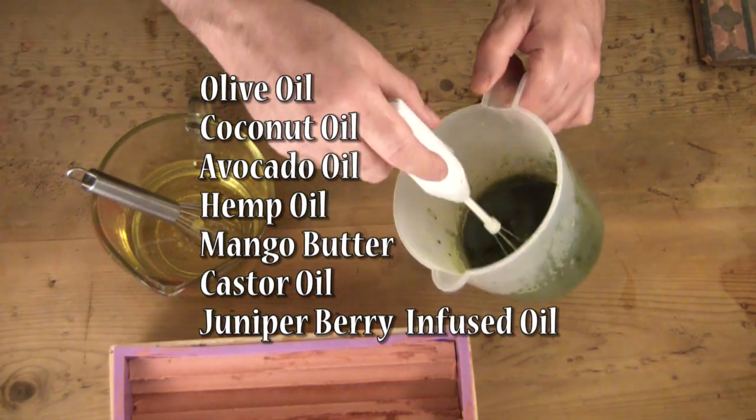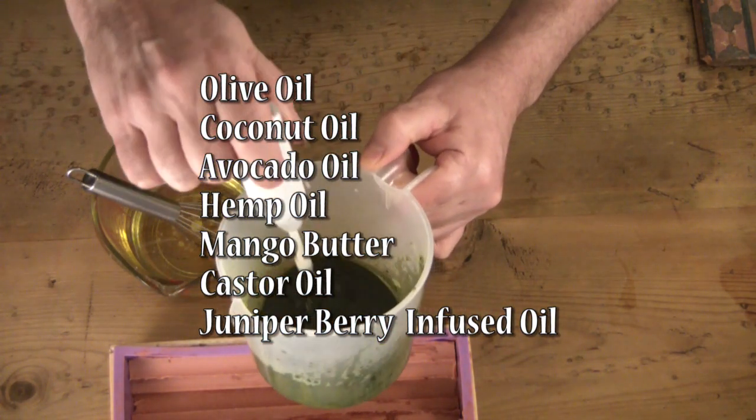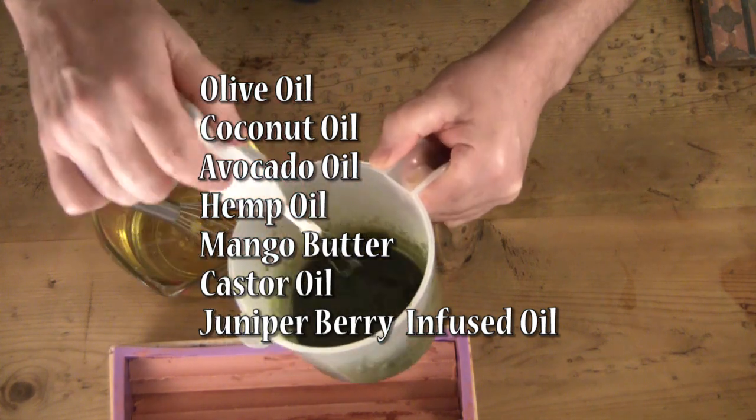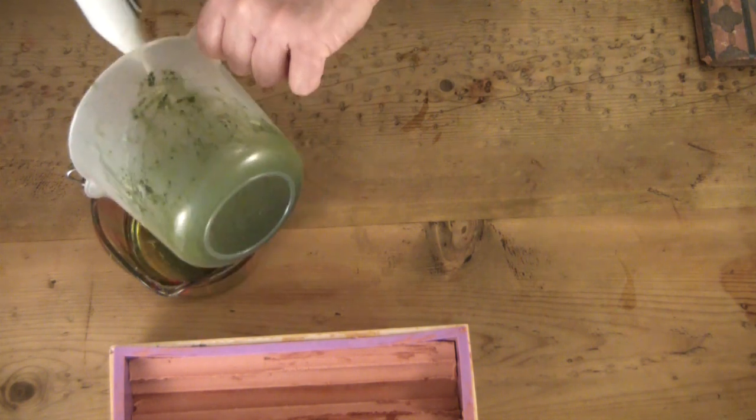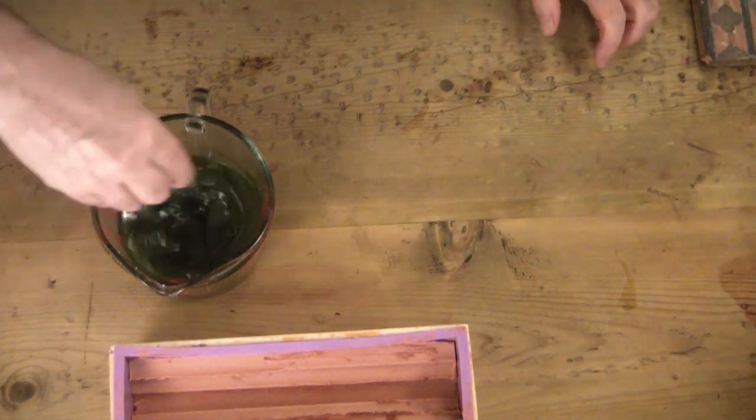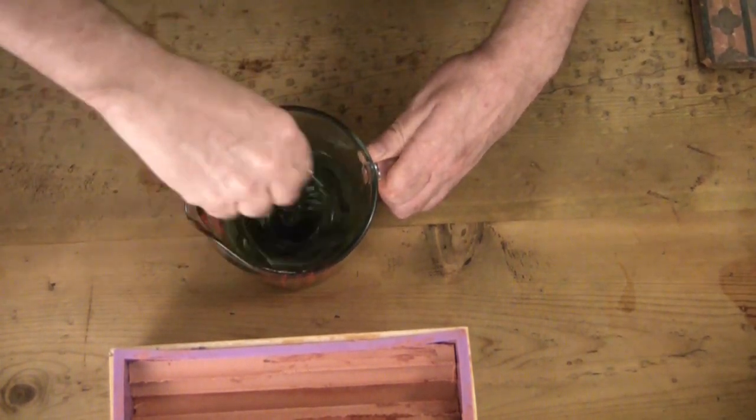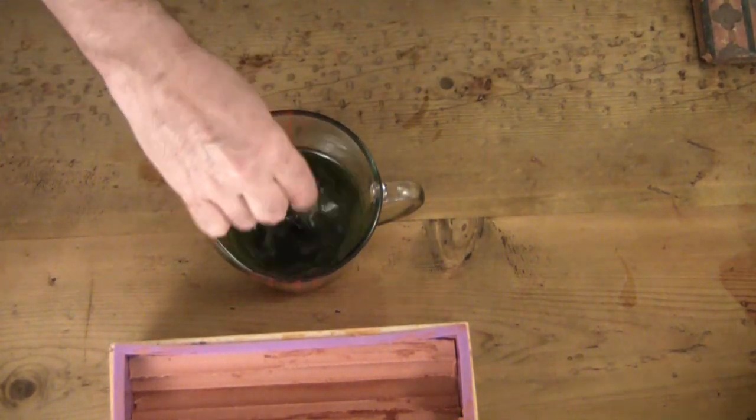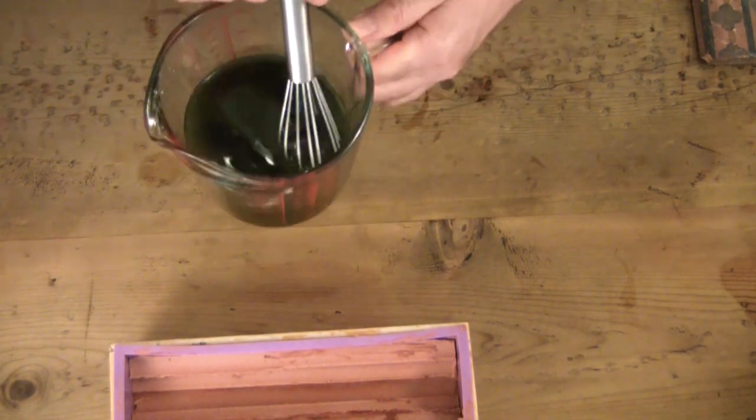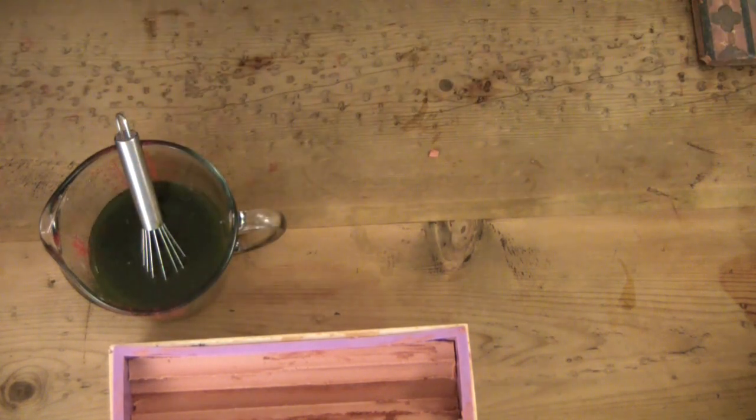This is going to be colored with the juniper powder that you saw me also make in the previous video where I made the powders. I'm using it to color my oil before I ever add any lye. I'm coloring the oil - that allows that juniper to absorb oils and just helps to prevent it from causing any problems with trace.